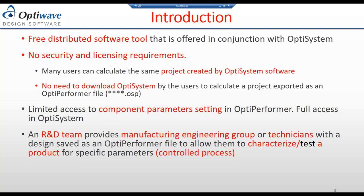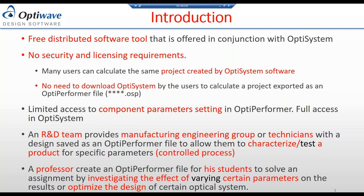Once the R&D team finalizes a design, they create an OptiPerformer file and pass it to manufacturing engineering, where the team can run specific tests on specific parameters in an experimental environment. Or it can be passed to technicians to check product quality and compare with what was built, to control the manufacturing process. Another application is in academia, where a professor creates an OptiPerformer file and passes it to students, setting certain parameters for them to investigate system performance or optimize a design.